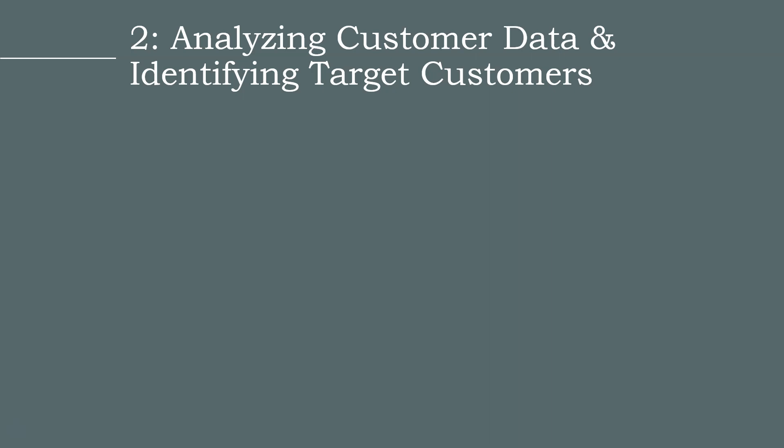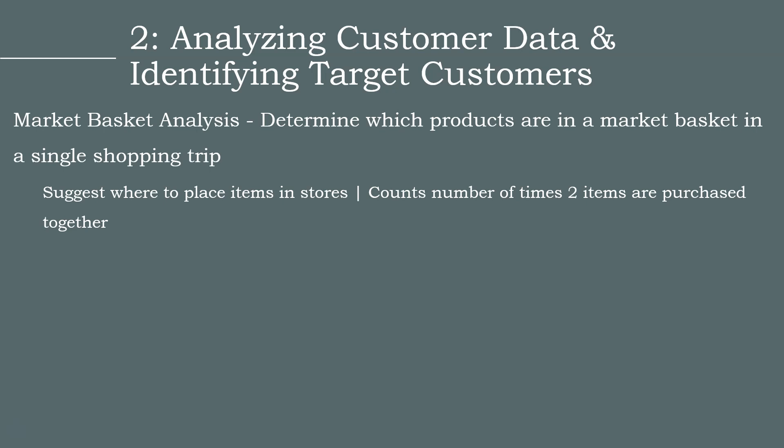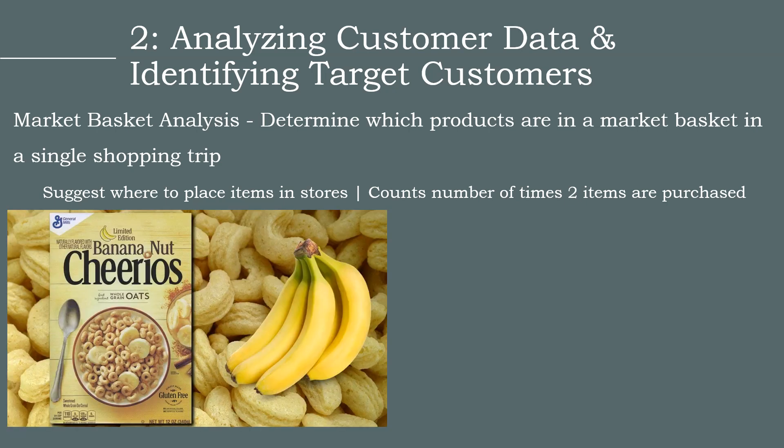One statistical technique we use is market basket analysis. This involves analyzing which products are purchased together during a single shopping trip to determine which items are frequently bought together. By conducting this analysis, we can suggest where to place merchandise in the store and which products to promote together. For example, if we find that bananas and cereal are frequently purchased together, we may hang bananas in the cereal aisle to increase the likelihood of customers purchasing both items.